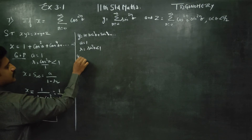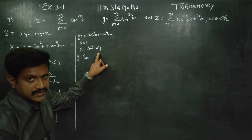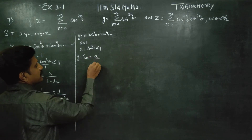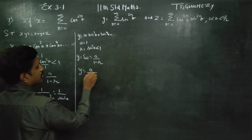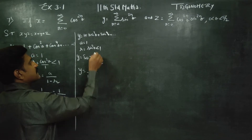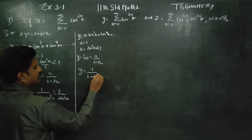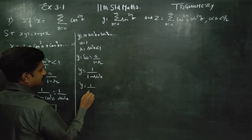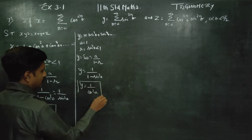Y is equal to S infinity, that is why I use it. Since it is less than 1, use the S infinity formula: A by 1 minus R. Therefore Y is equal to A by 1 minus R. A is equal to 1, and 1 minus sin square theta is cos square theta. So Y's answer is 1 by cos square theta.